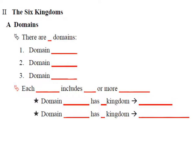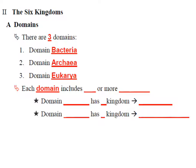We are going to talk about the domains first, which is the highest, most inclusive, and least specific level. There are three domains: domain bacteria, domain archaea, and domain eukarya. All living things fall into one of these three domains, and each domain includes one or more kingdoms.